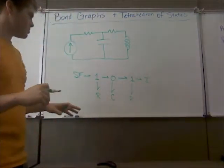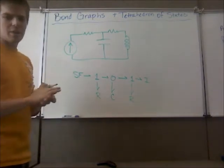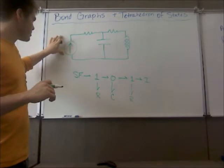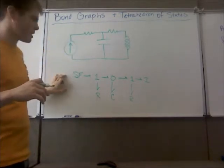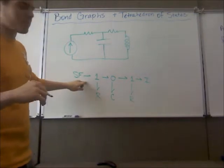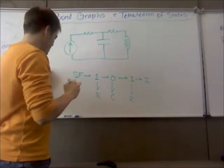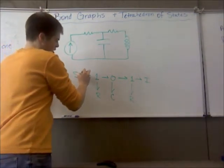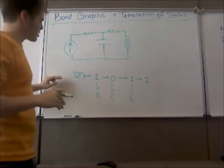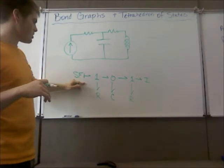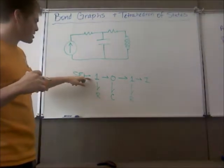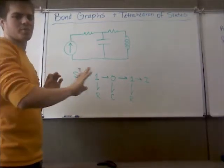So here is our bond graph for this electrical system. Now we're going to try to assign causal strokes. First we're going to start with the source flow. Now if you remember what I said before, the source flow is going to go on the inside because the flow is going that way. And when you're assigning a flow you put it on the inside. If you're assigning an effort it would go on the outside to show like it's pushing.